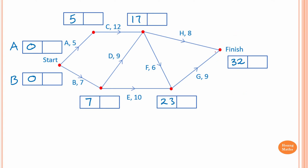Now let's use backward scanning to work out the latest starting time. The earliest finishing time is 32, so we write 32 here first. To come back to activity G, we go 32 minus 9, which is 23. Please take note: for forward scanning, we take the largest value; for backward scanning, we take the smallest value.